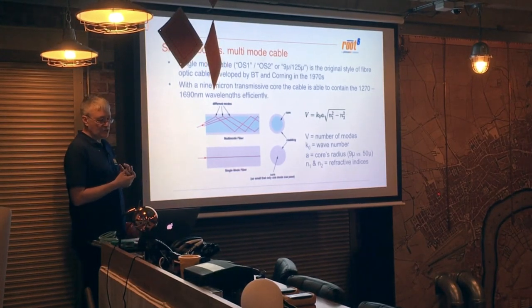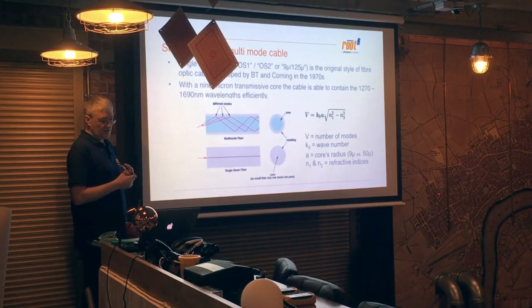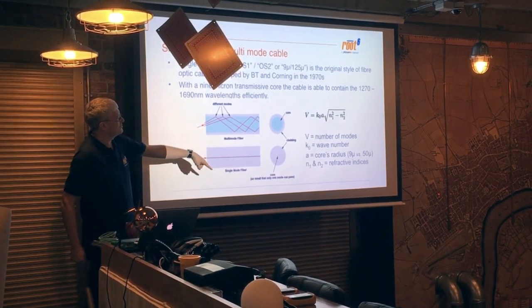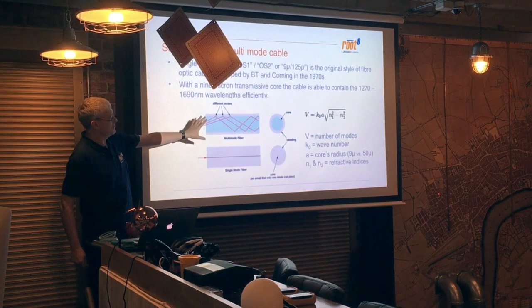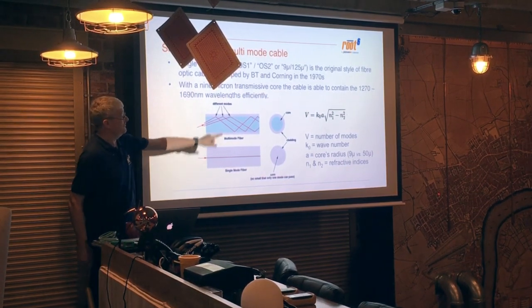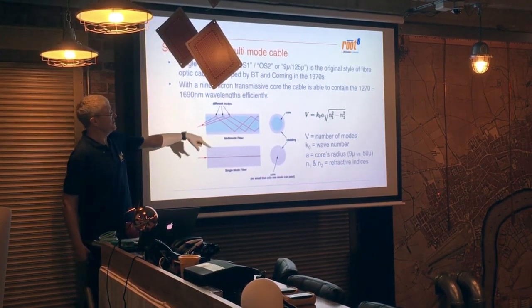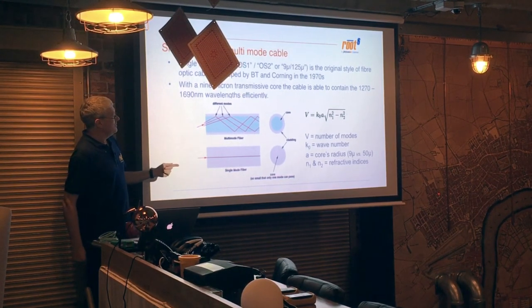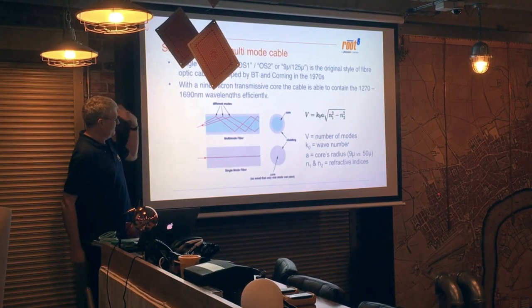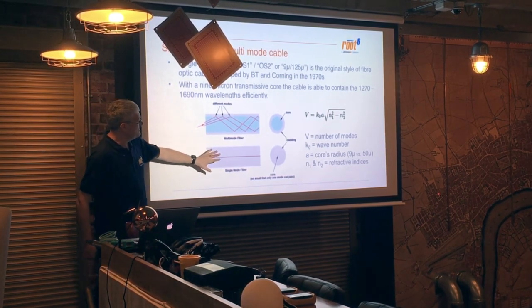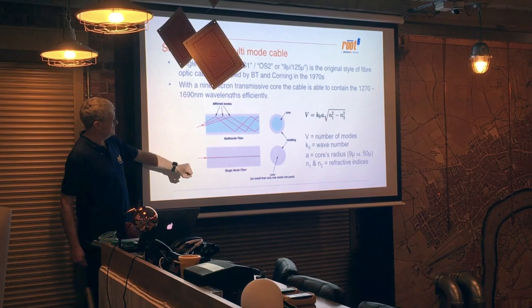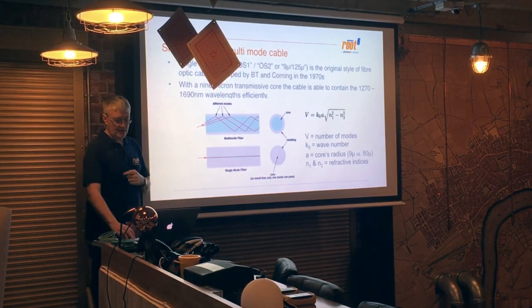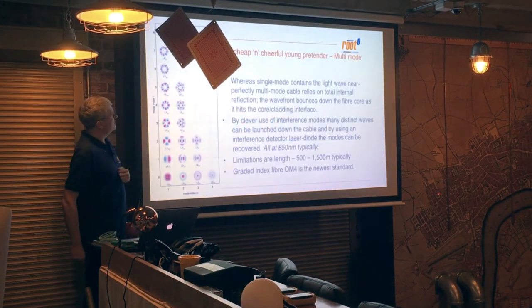The important variable is A, the core's radius. As the core's radius gets smaller and smaller, the number of modes that can be pushed down the cable tends to one — V tends to one as A decreases. This was understood for about 50 years. It was only really in the 90s when people started to figure out that you could make the transmissive core bigger and hence push more modes of light down the cable that the idea of multimode cable was developed.